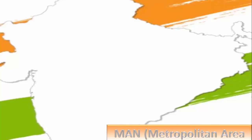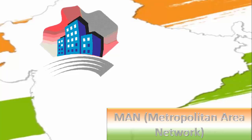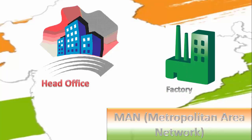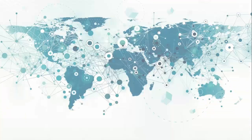Now let's talk about the Metropolitan Area Network. This is a company XYZ having its head office in the center. They design their products there and have their factory on the eastern side. To send their designs to the factory, they use their own network. This type of network is known as a Metropolitan Area Network, which is not connected to the outer internet.